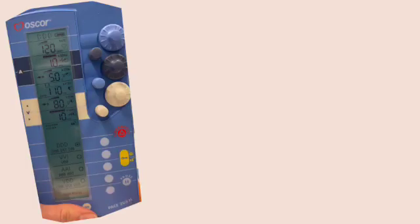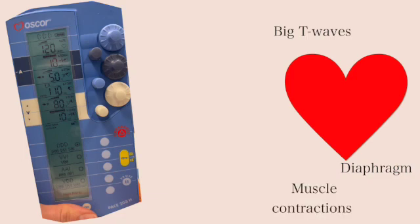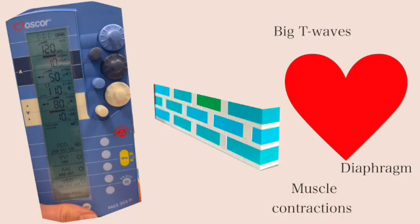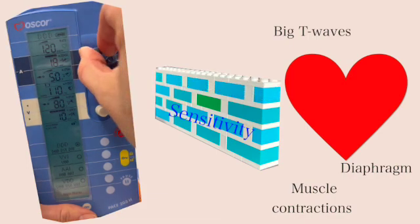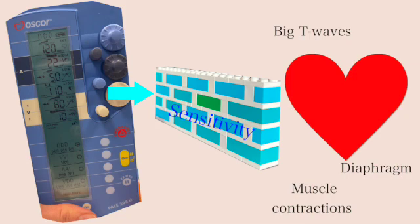Here's the pacemaker and here's the heart and anything else the pacemaker might see. Between them is a wall, which is the sensitivity. When I turn up the sensitivity to a higher number, I'm making that wall higher, so it's harder for the pacemaker to see the heart. The pacemaker is less sensitive.